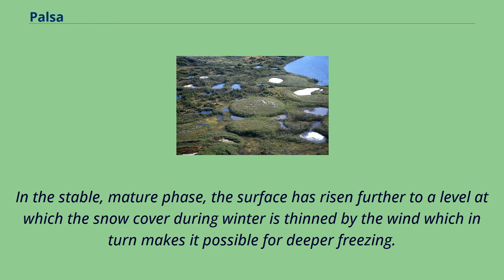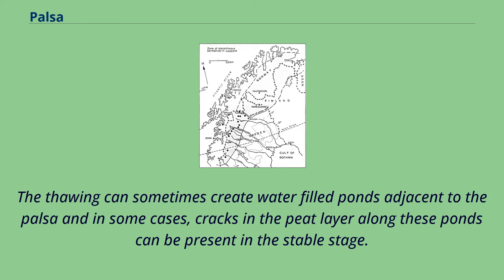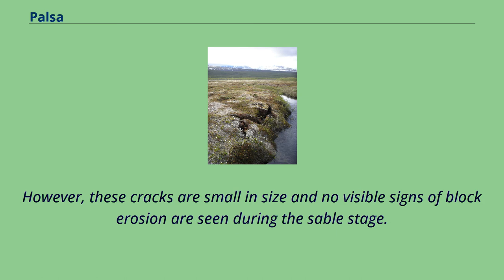In the stable, mature phase, the surface has risen further to a level at which the snow cover during winter is thinned by the wind, which in turn makes it possible for deeper freezing. In the mature stage, the frozen core has reached beyond the peat layer into the underlying silty sediments, and during summer thawing of the core occurs but not to an extent where the core thaws completely. The thawing can sometimes create water-filled ponds adjacent to the palsa, and in some cases cracks in the peat layer along these ponds can be present in the stable stage. However, these cracks are small in size and no visible signs of block erosion are seen during the stable stage.